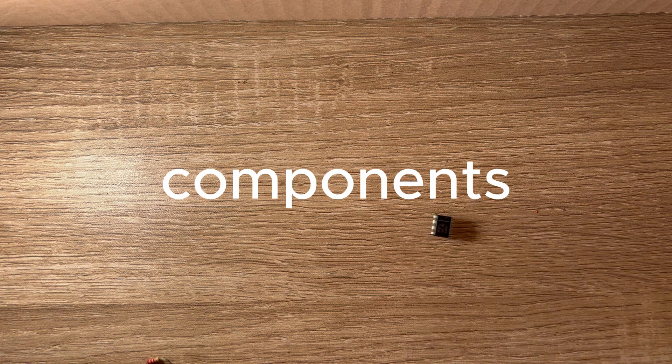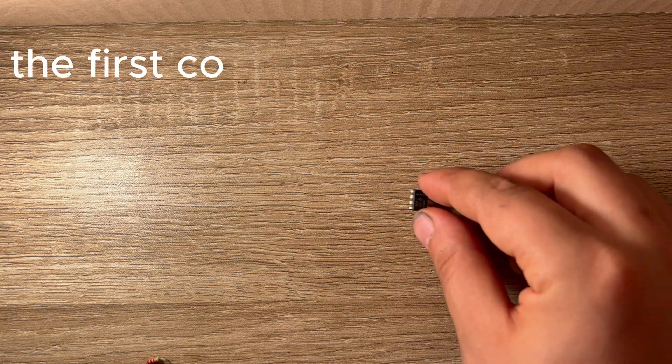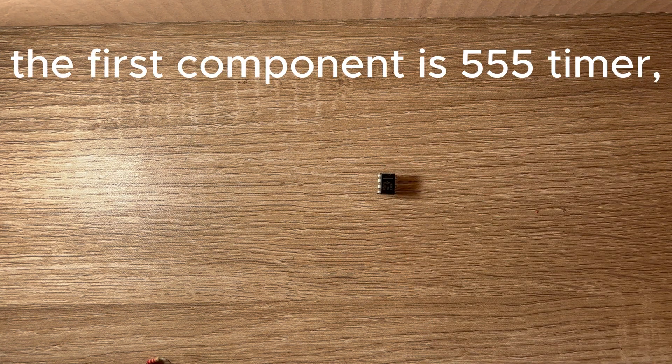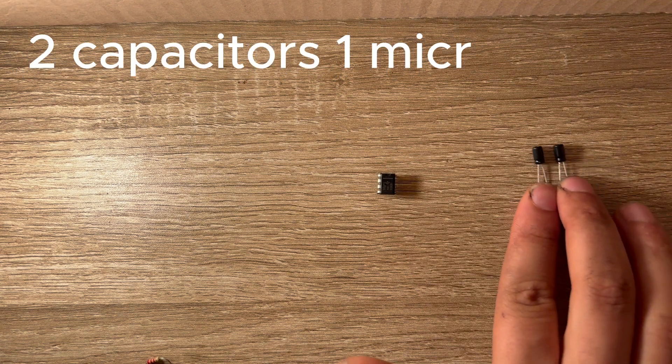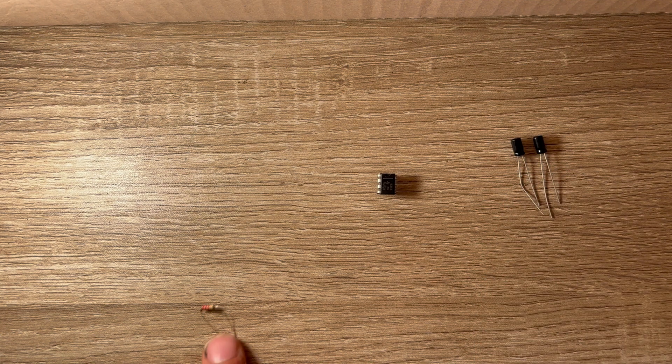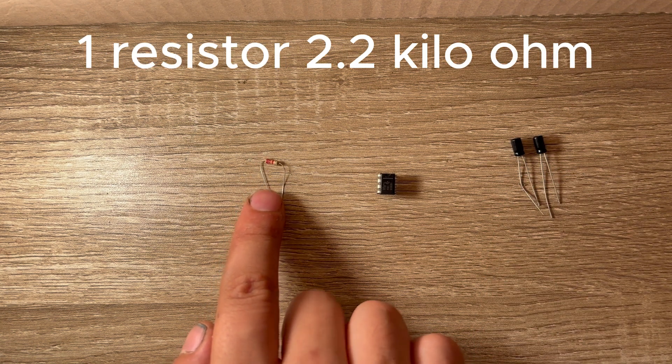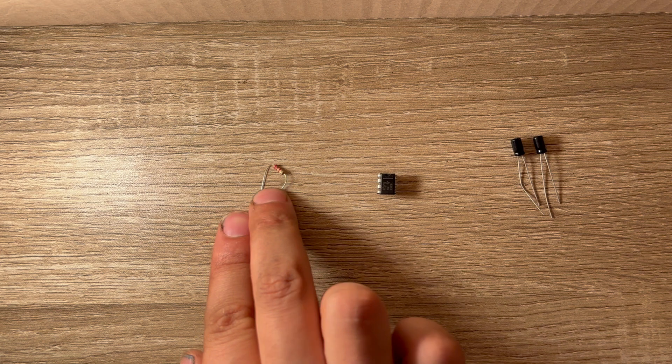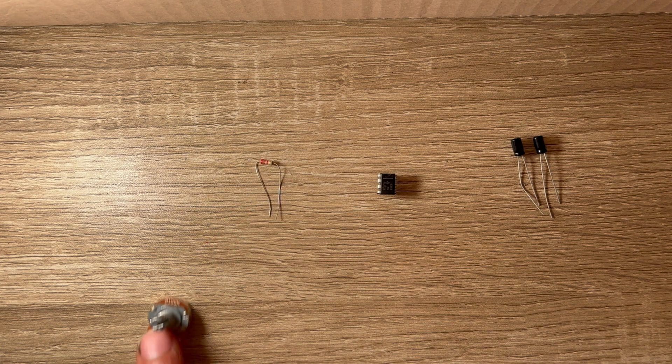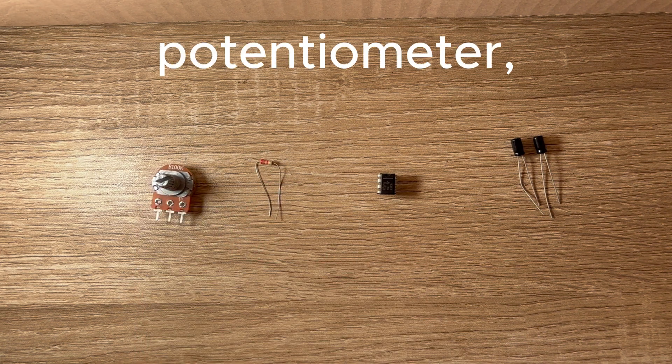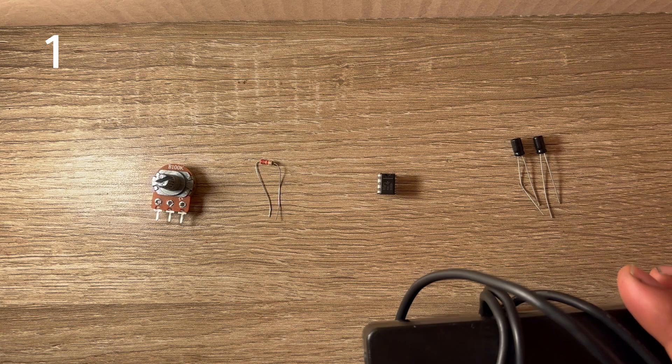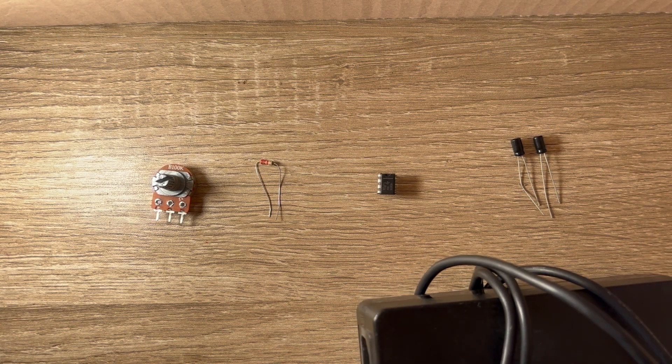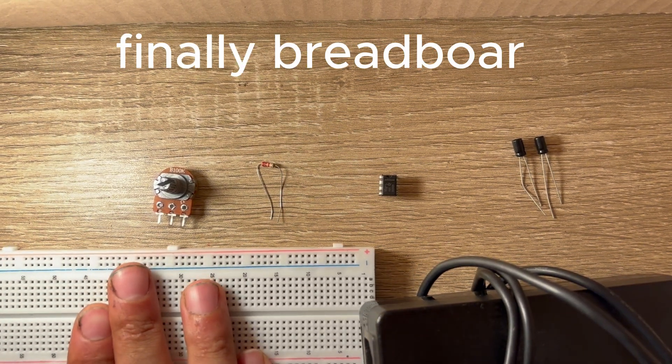Components: The first component is a 555 timer, two capacitors 1 microfarad, one resistor 2.2 kOhm, a potentiometer, 12V DC power supply, and finally a breadboard.